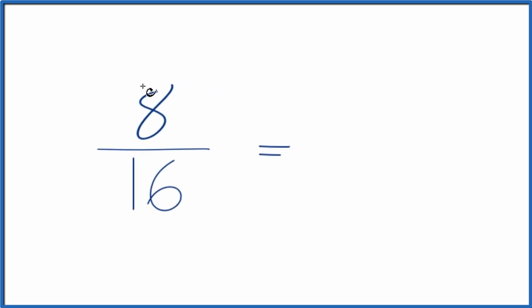So why don't we simplify 8 16ths? These are both even numbers. Let's just divide 8 by 2 and then 16 by 2. 8 divided by 2 is 4. 16 divided by 2 is 8.